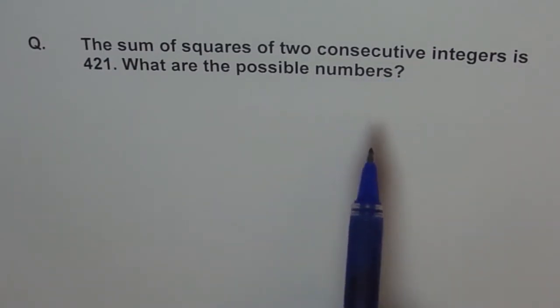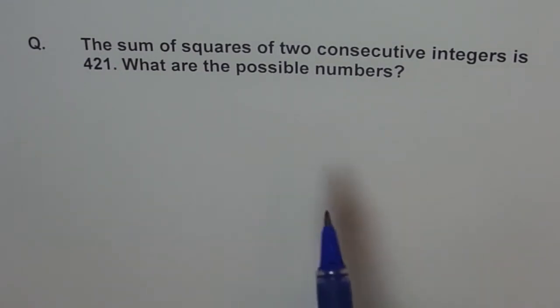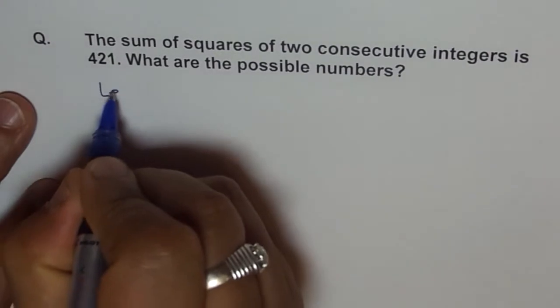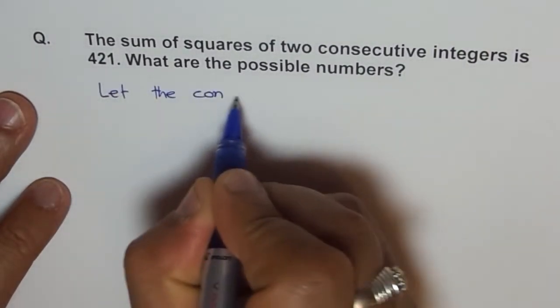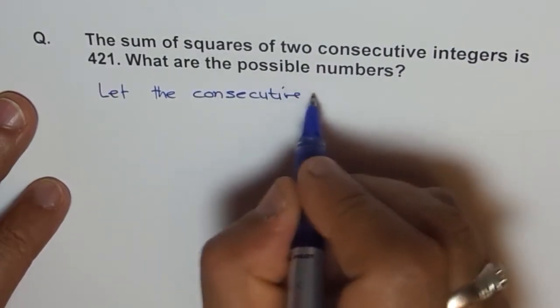The numbers which come together are consecutive numbers. For example, 100 and 101 they are consecutive, 5 and 6 they come one after another, they are consecutive. Therefore two numbers in general which are going to be consecutive will be X and X plus 1. So let the consecutive numbers be X and X plus 1.